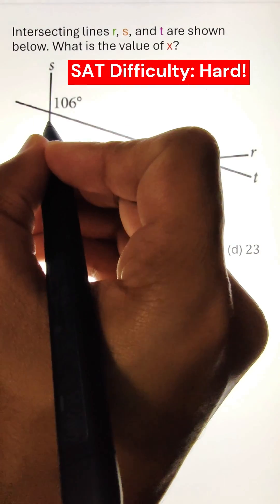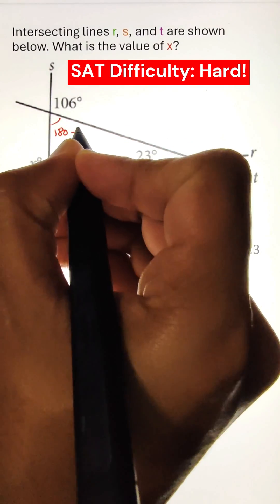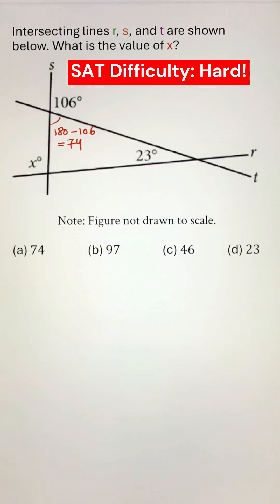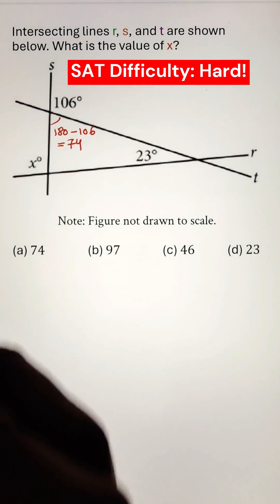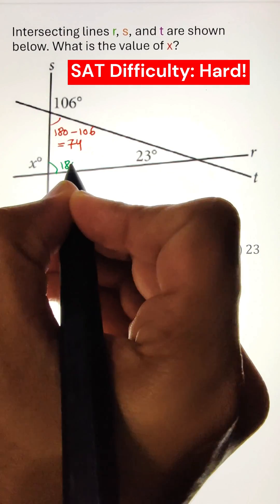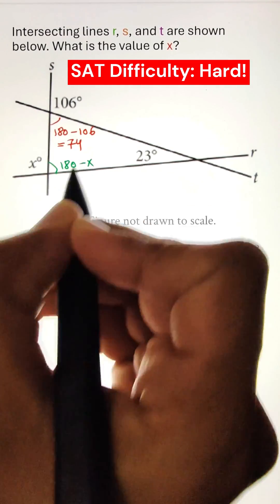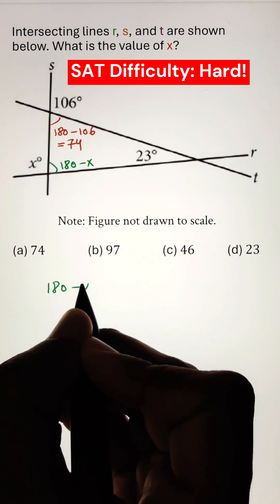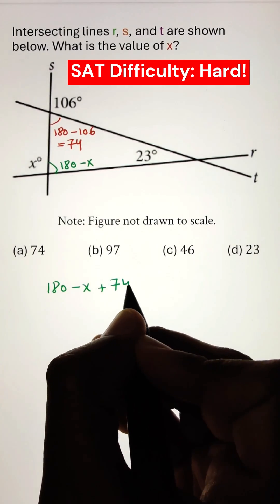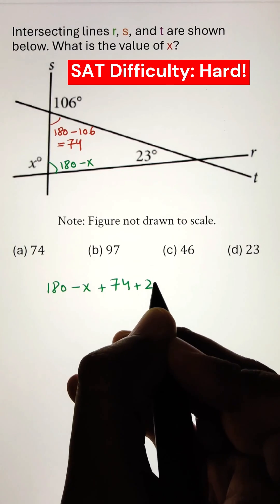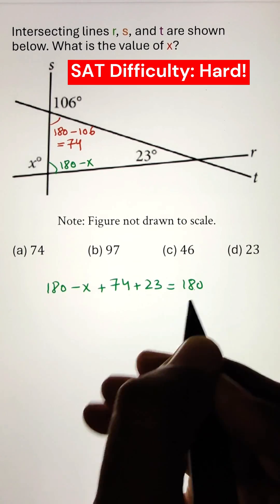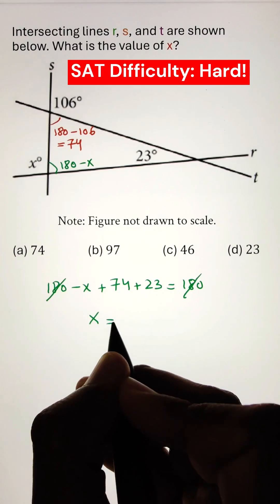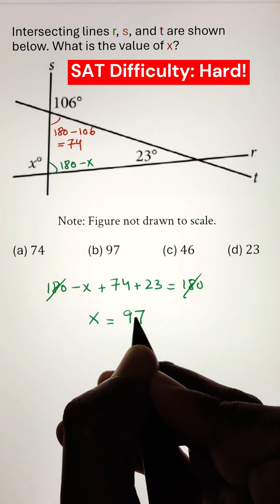In order to find the angle X formed by line SNR as shown in the figure, we can first calculate the angle adjacent to 106 by subtracting it from 180. Similarly, the angle adjacent to X will be 180 minus X. Finally, by adding the three internal angles of the triangle and equating it to 180, we can get the value of X.